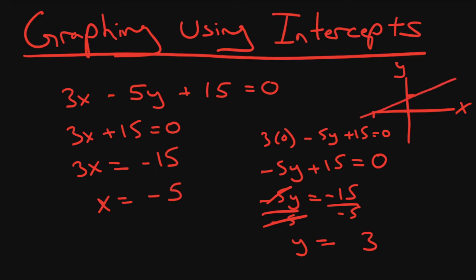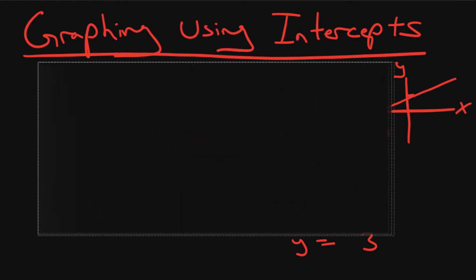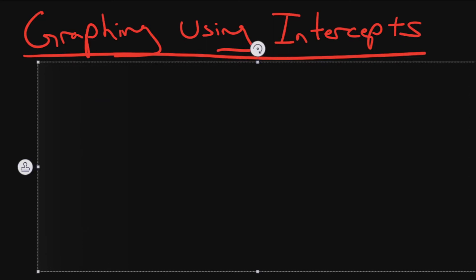So our y-intercept is a plus 3 somewhere there, and then our x-intercept is negative 5 which is somewhere there. So this line goes something like that, roughly. That is a very easy way to graph. It's pretty straightforward. So let's do the same kind of problem but in reverse order.